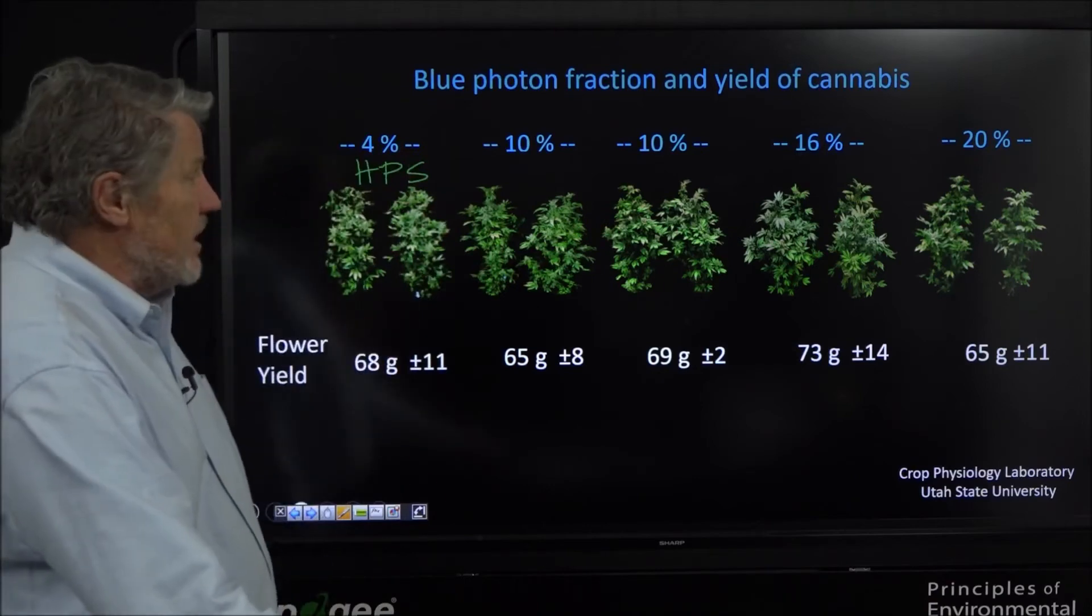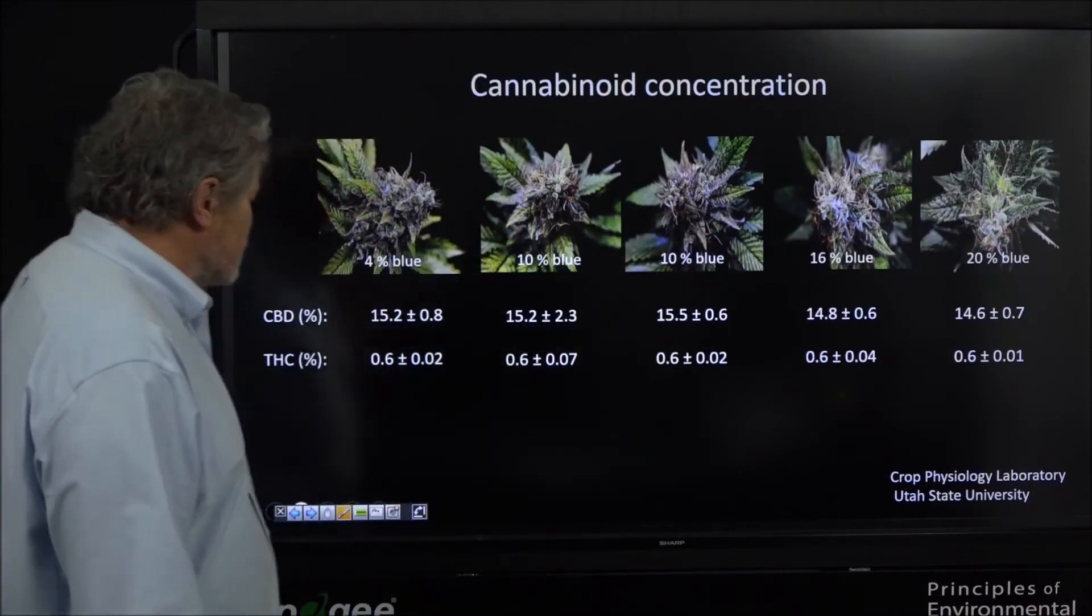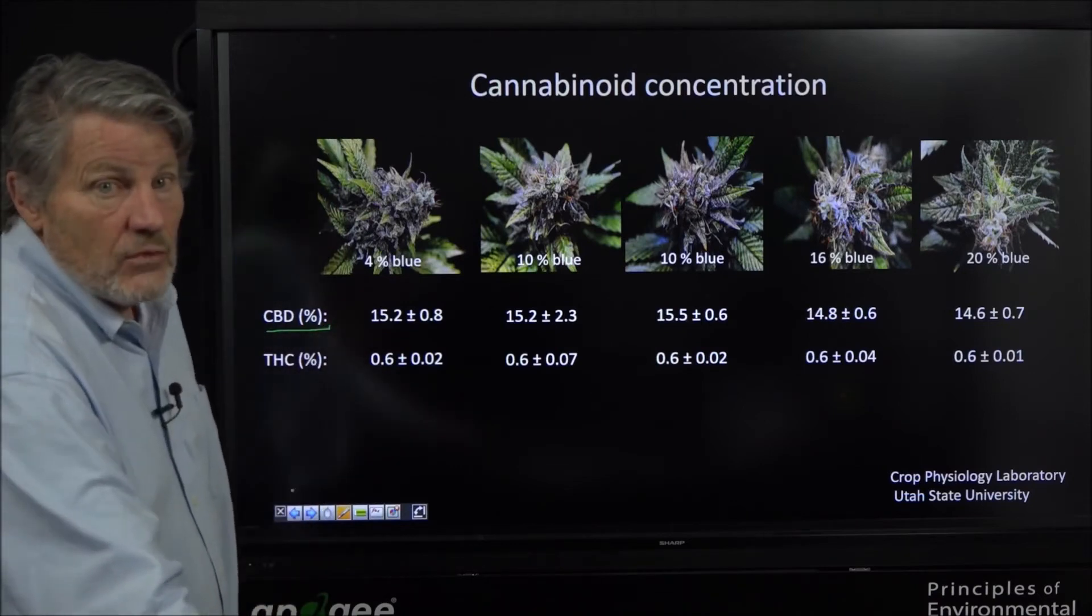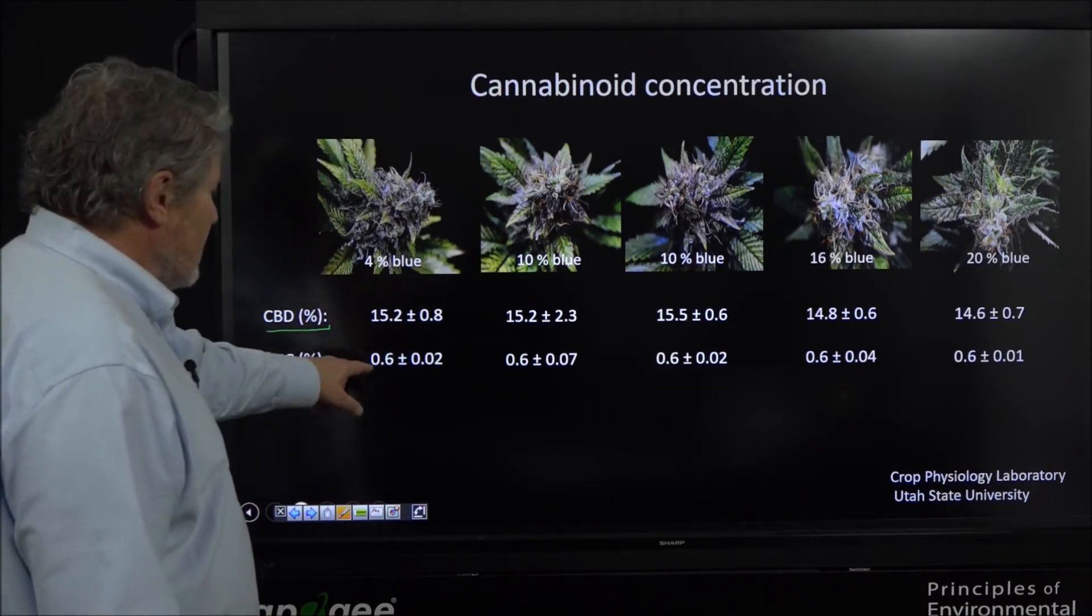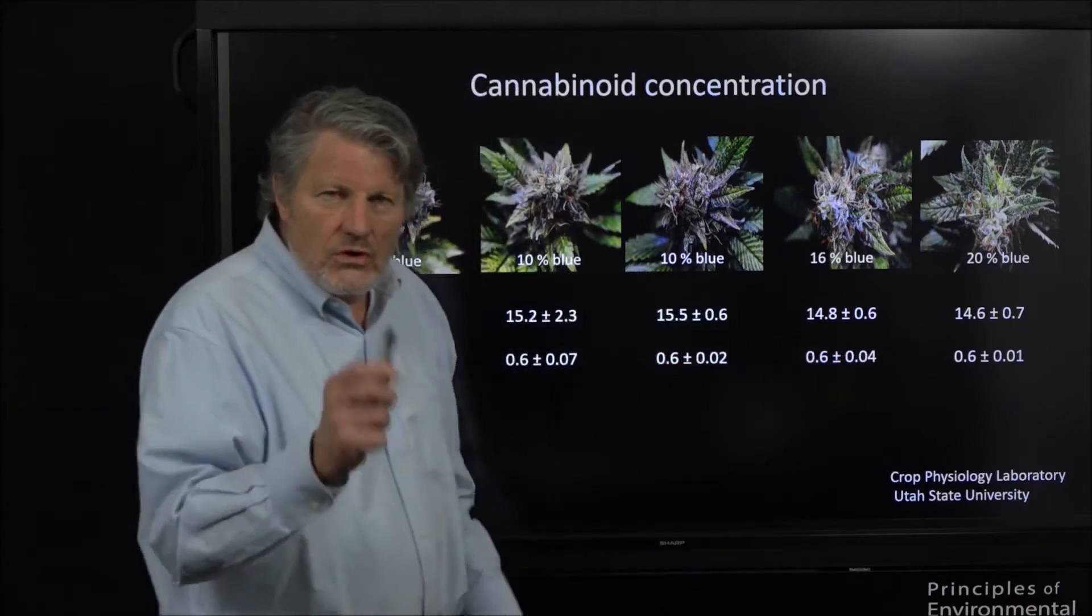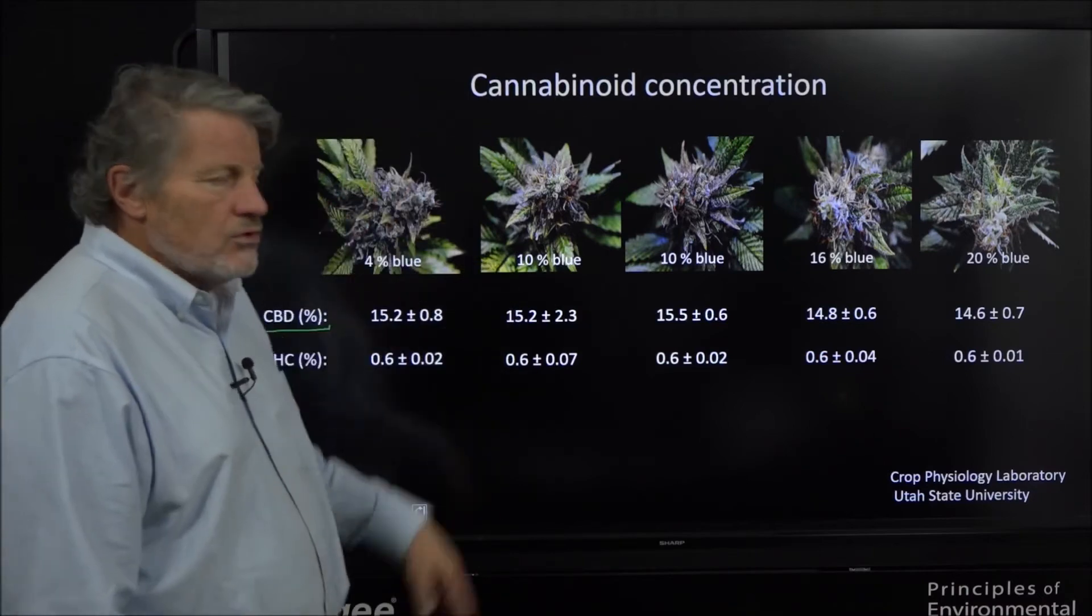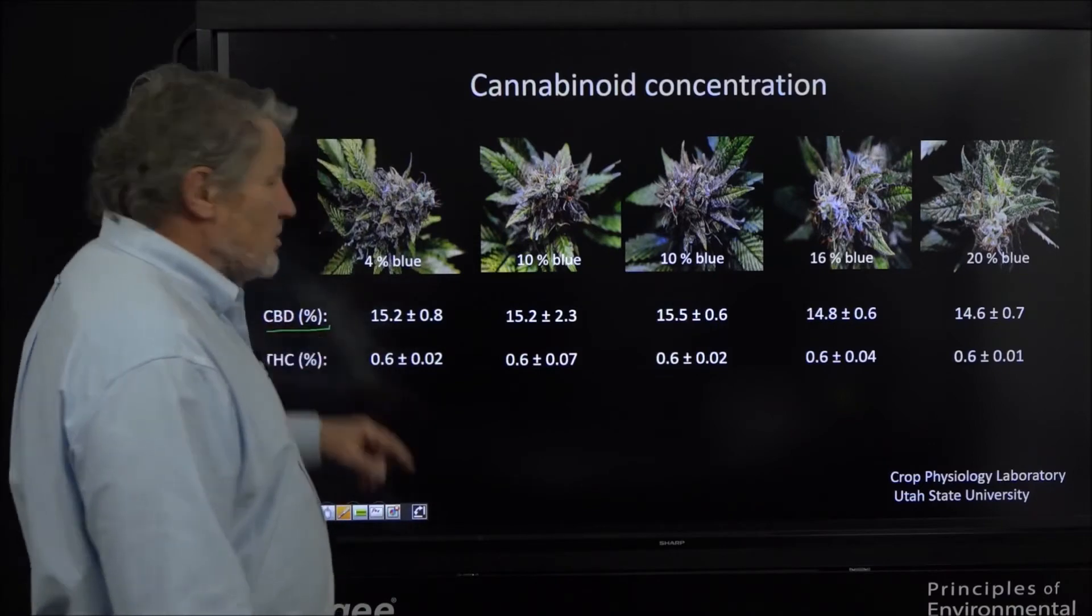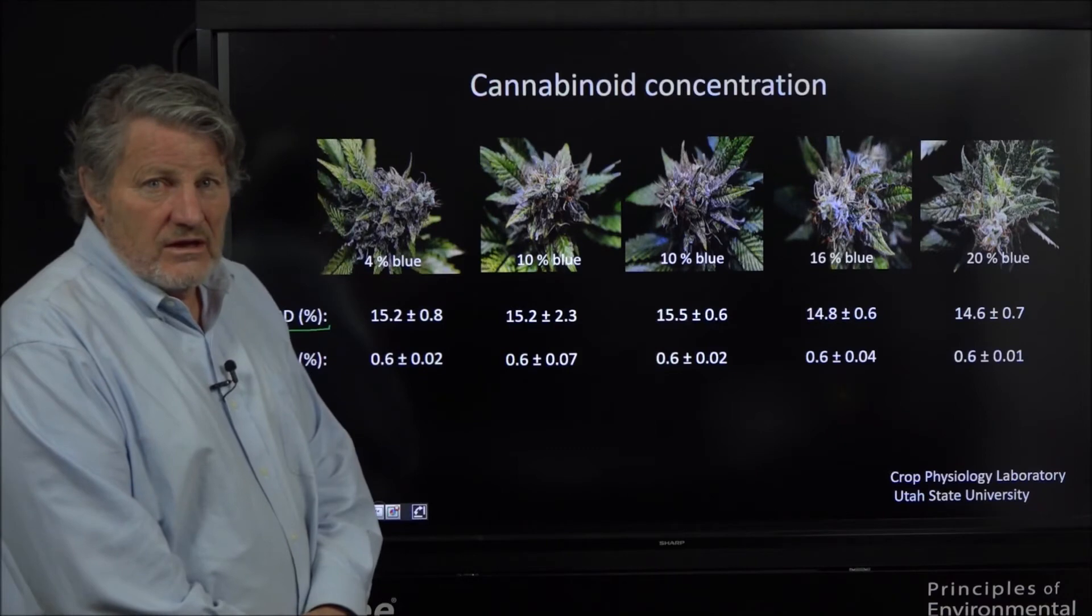What about the cannabinoids in the plants? Surely this range of blue must have done something. The next slide is cannabinoids. Here's the flowers at harvest, same thing - 4 to 20%. These were medical hemp so they have mostly CBD but some THC. Look at the THC: 0.6, 0.6, 0.6, 0.6, 0.6, 0.6 - exactly the same. There was no effect of colors of light and ratios of colors and especially blue on THC production and there was no effect on CBD either.